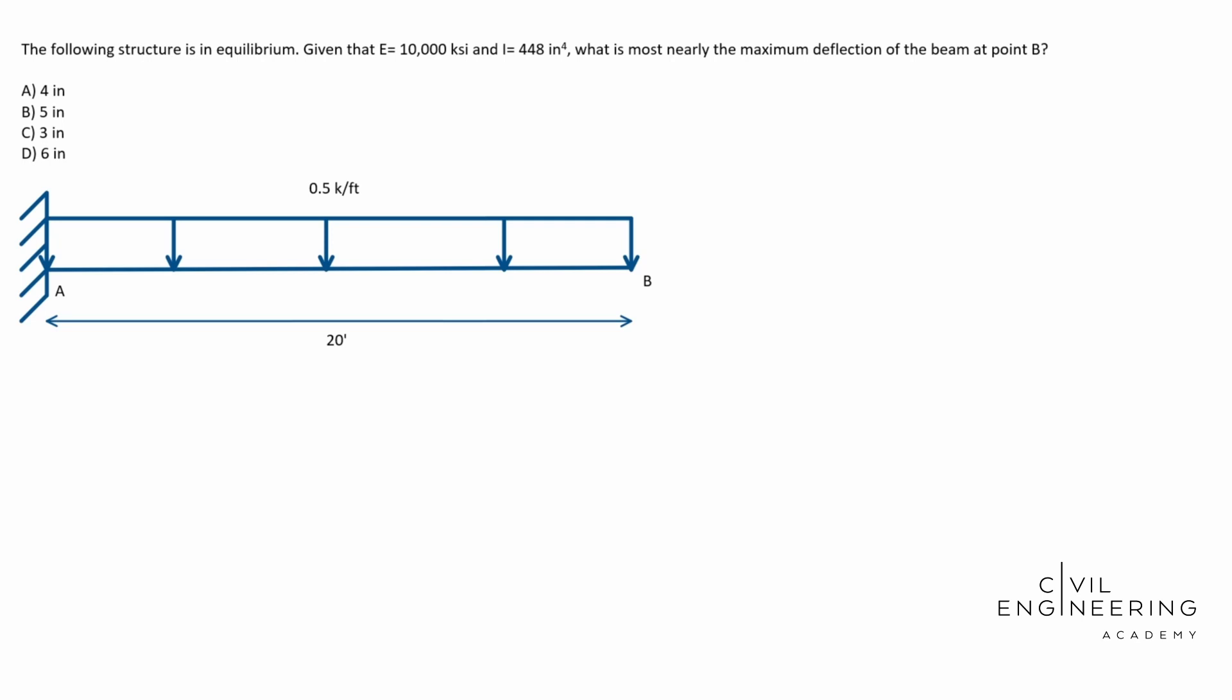So today we have a structural mechanics problem, and in particular this is a deflection problem. Here's what the question says: the following structure is in equilibrium. Given that E equals 10,000 KSI and I equals 448 inches to the fourth, what is most nearly the maximum deflection of the beam at point B?